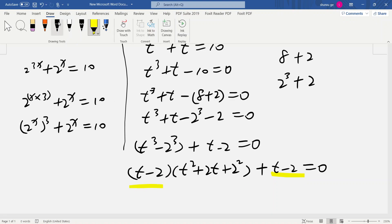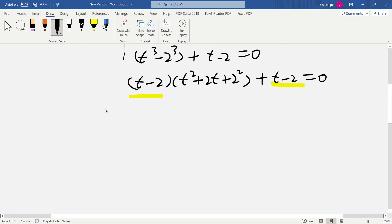t - 2. Okay, so we take this t-2 out: (t-2)(t^2 + 2t + 4), 2^2 is 4, plus 1 equals 0.